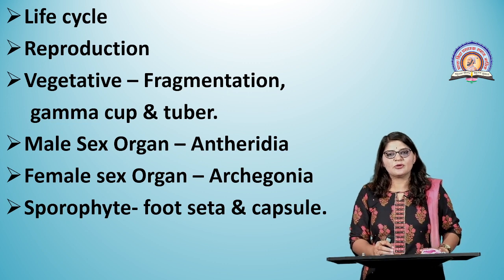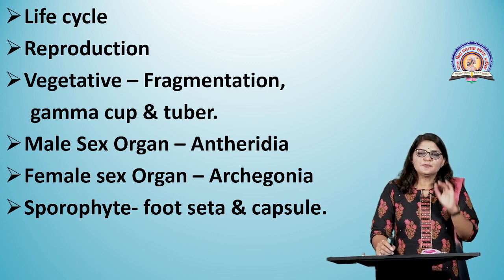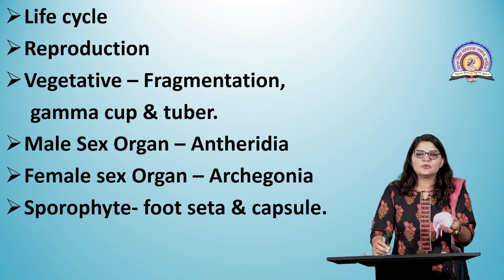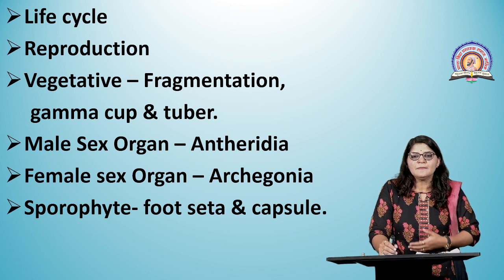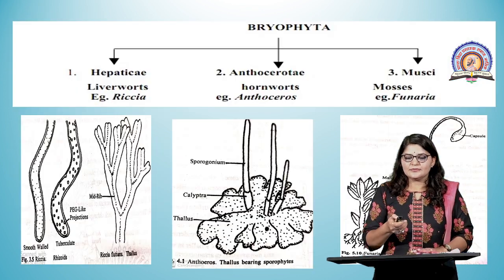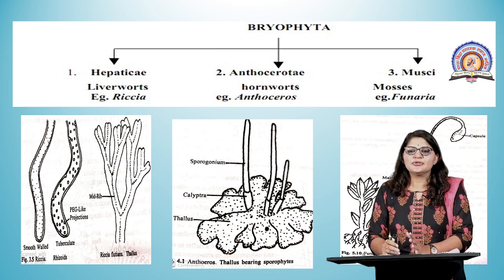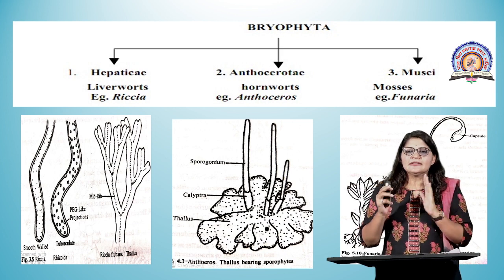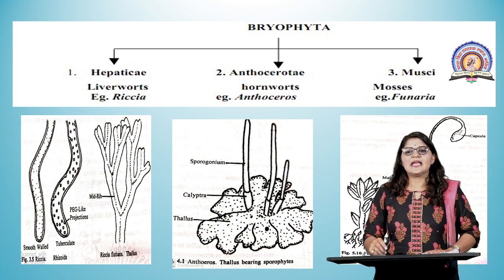Bryophytes are primitive land non-vascular plants and are the amphibians of the plant world. Sex organs are multicellular with a well-developed jacket layer (unlike algae, where sex organs are non-jacketed). The life cycle has two distinct phases: gametophytic phase (haploid) and sporophytic phase (diploid). Vegetative reproduction occurs through fragmentation of thallus, formation of gemma cups, and adventitious branches. Tubers (starch-rich globular structures) detach and grow as new thalli. Sexual reproduction is oogamous — male sex organ is antheridium, female is archegonium.